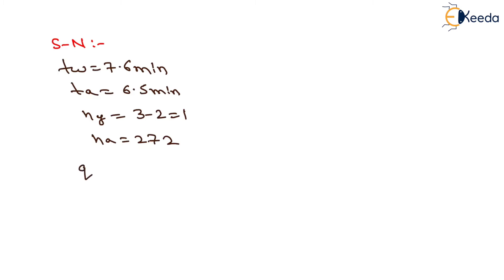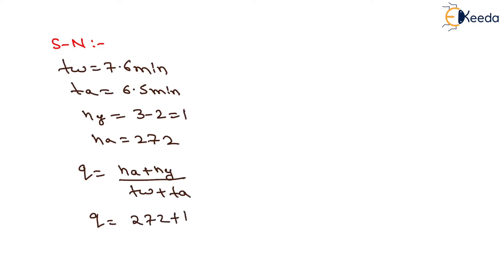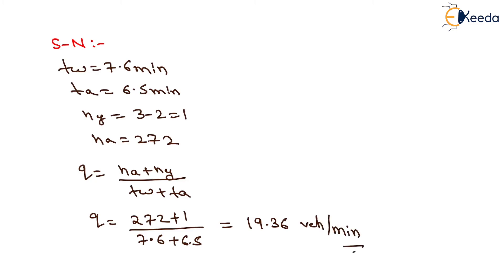We have to determine the value of Q, which equals NA plus NY upon TW plus TA. Putting NA as 272, NY as 1, TW as 7.6, and TA as 6.5, on solving this we will have Q equals to 19.36 vehicles per minute.